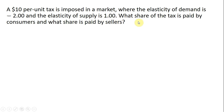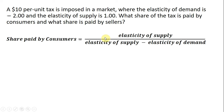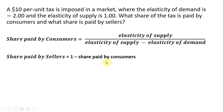What share of the tax is paid by consumers and what share is paid by sellers? The key formula here is the share paid by consumers, which equals the elasticity of supply divided by the elasticity of supply minus the elasticity of demand. The share paid by the sellers can be found as simply 1 minus the share paid by consumers.